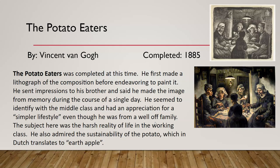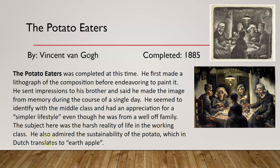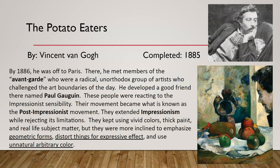He also admired the sustainability of the potato, which is what they're eating — in Dutch, the word translates to 'earth apple.' By 1886, he was off to Paris. There he met members of the avant-garde, a radical unorthodox group of artists who challenged the art boundaries of the day, going against Impressionism.